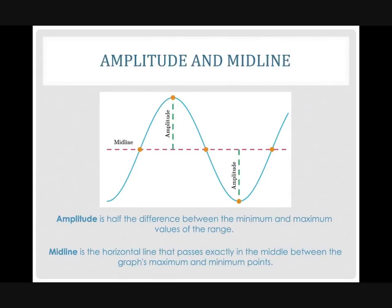This is known as your amplitude. And the amplitude is half the distance between the minimum and maximum values of the range. The midline is the horizontal line that passes exactly through the middle of the graph's maximum and minimum points. You can also think of the amplitude as the distance between the max point, the height of your maximum point, and also the height of the midline.